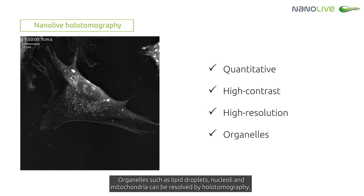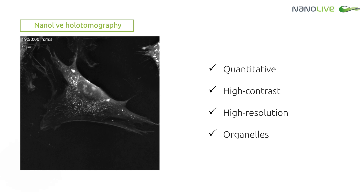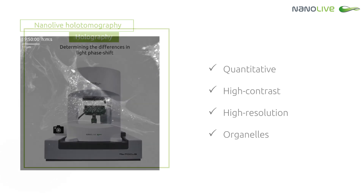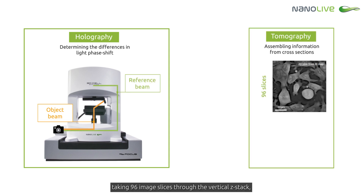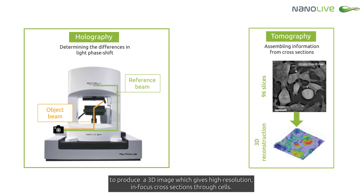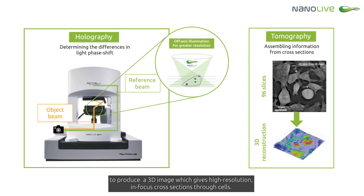Organelles such as lipid droplets, nucleoli and mitochondria can be resolved by holotomography, as well as intricate membrane structures like ruffles and adhesions and thick actin fibers. Nanolive's holotomographic imaging platforms use a unique rotating light source to improve resolution, taking 96 image slices through the vertical Z-stack to produce a 3D image which gives high-resolution in-focus cross-sections through cells.